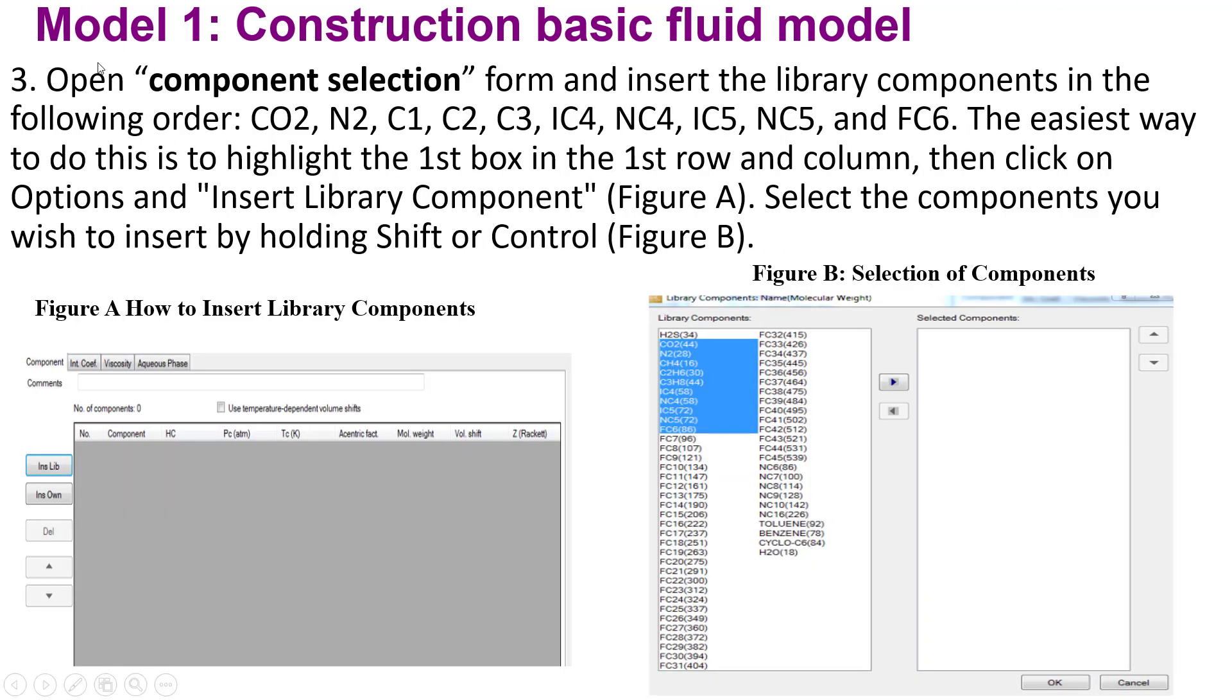Step number three: open Component Selection and insert library components in the following order: CO2, N2, C1, C2, C3, iC4, nC4, iC5, nC5, nC6, and FC6.